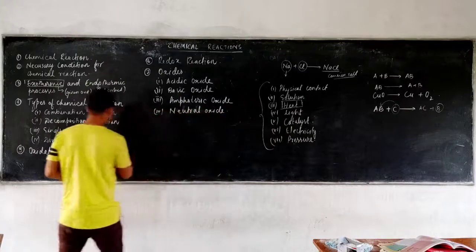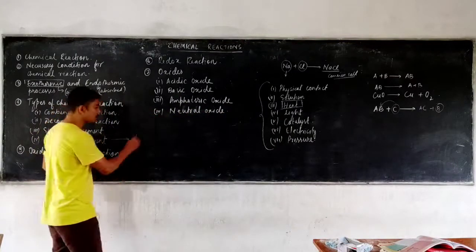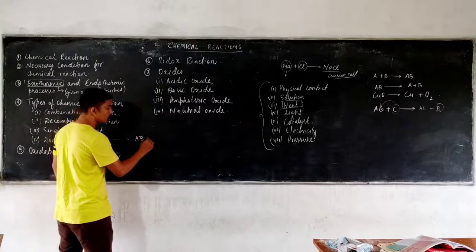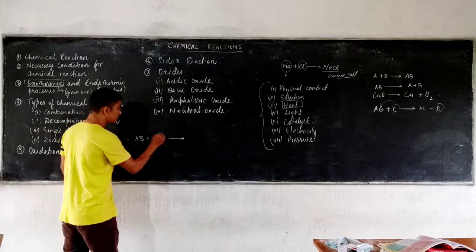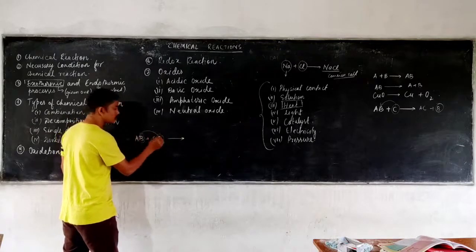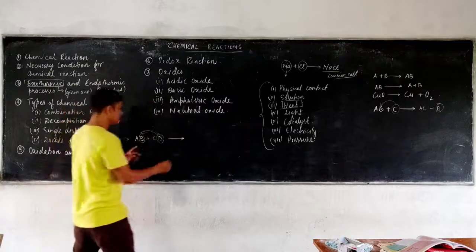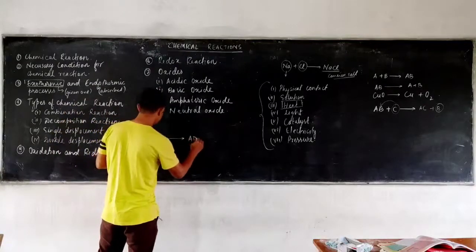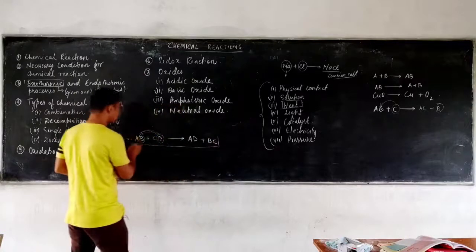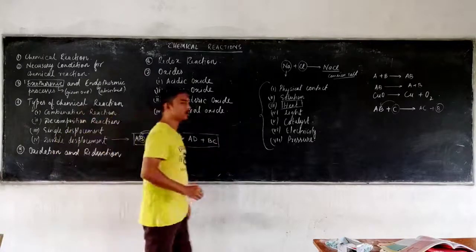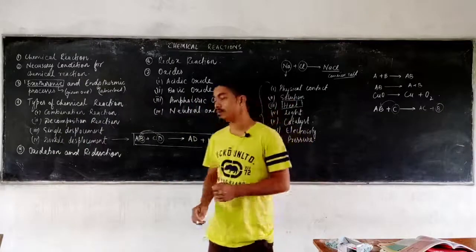The fourth type is double displacement reaction. Here displacement occurs twice. If we have two compounds AB and CD, then D and B interchange — D displaces B and B displaces D — giving AD and CB. This kind of reaction, where the displacement of elements occurs two times, is known as a double displacement reaction.